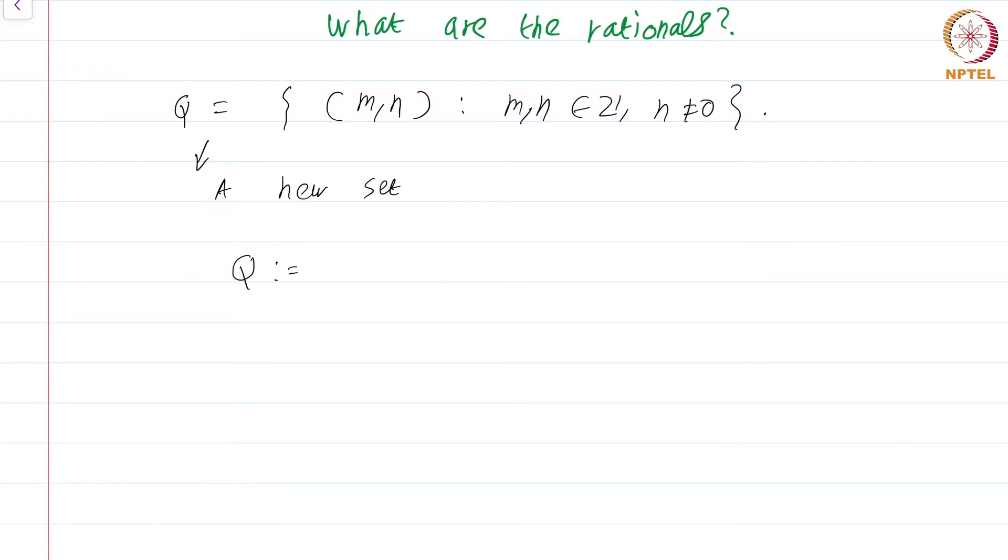I just define it to be equivalence classes under ~ on Q. And what is ~? ~ is (m,n) is related to (p,q) if and only if mq is equal to np.